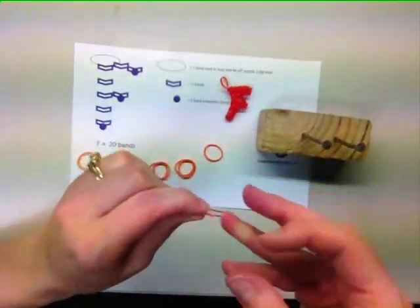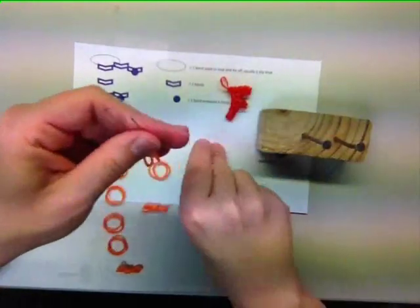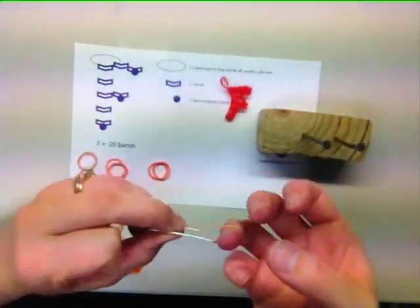Then remove it from your paper clip. You will need to repeat these steps two more times. Now that you have all the pieces ready, it's time to weave.